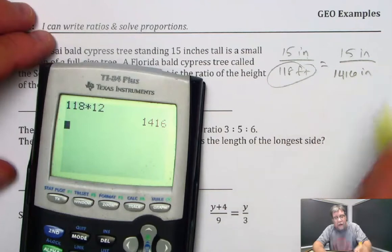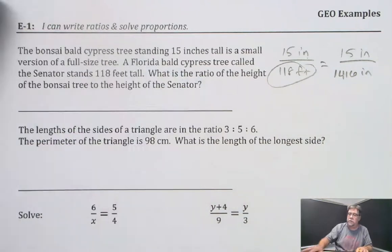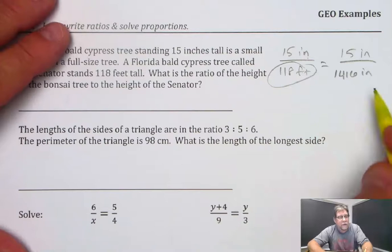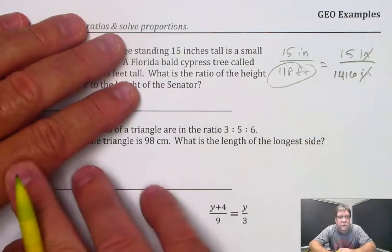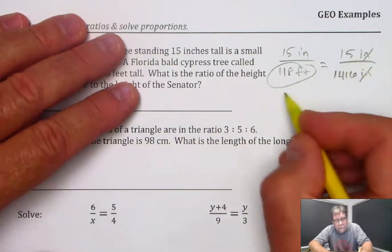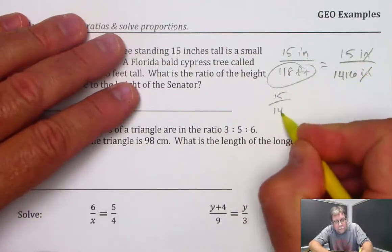And that's 118 feet written in inches. So once I have that, you can see that now I can use a ratio. Because these will cancel, and I need to reduce my 15 over 1416.